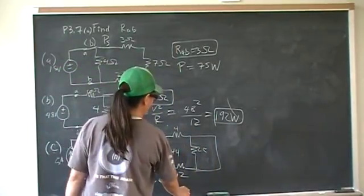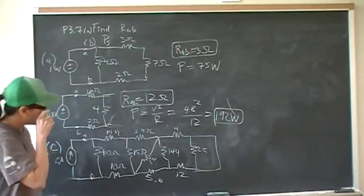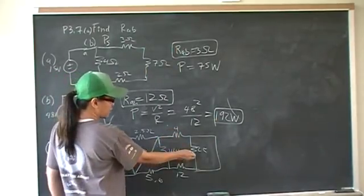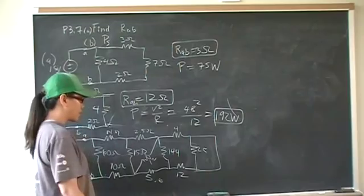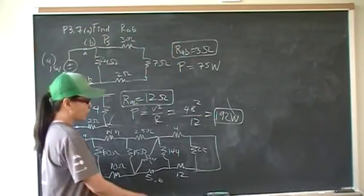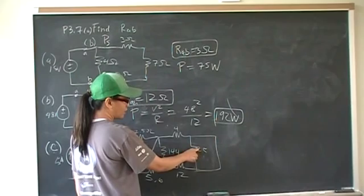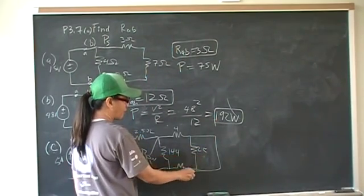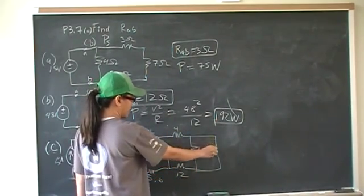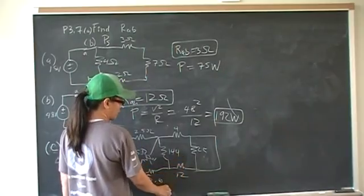Okay, and the last one is a little bit tricky because it looks like 4 is in series with 25 in series with 12, but we actually have a jumper that is shorting out the 25 ohm resistor. So it's really 4 in series with 12, and that's just going to be 16.